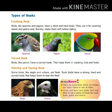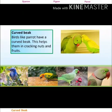First is the crushing beak. Birds like sparrow and pigeon have a short and hard beak. They use it for crushing seeds and grains. They make the food soft before eating it — they crush it first to make it soft, and then eat it.